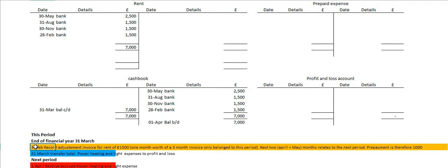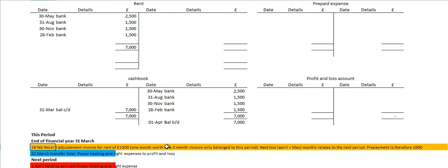The only thing is that on the 28th of February we paid for a rent bill worth £1,500. However, that invoice was for a total of three months — £1,500 covering three months. The only problem was that only one of those months belonged to this period; the other two months belonged to the next period. One month is £500, two months is £1,000, three months is £1,500.